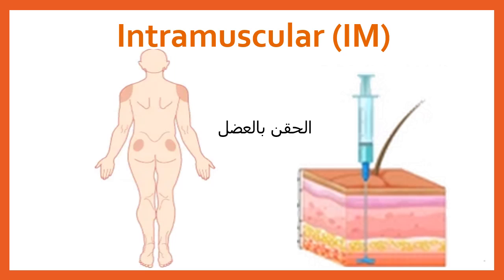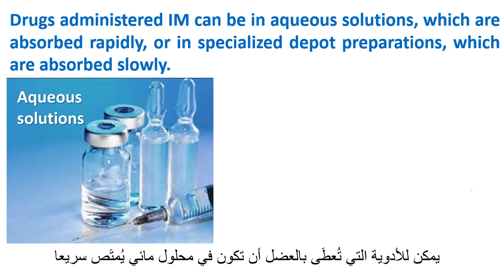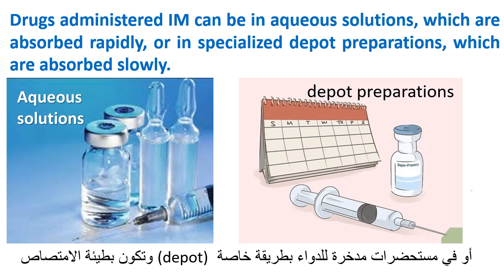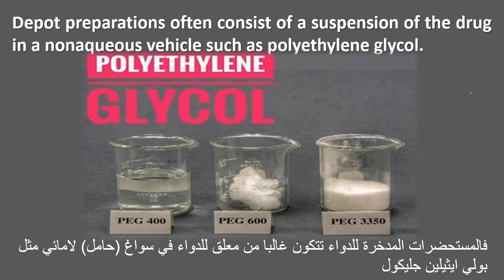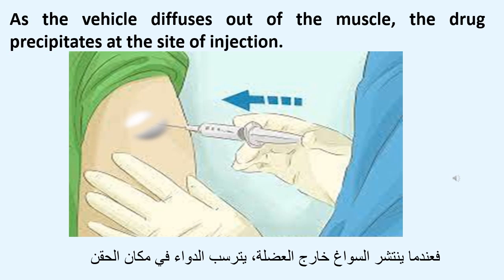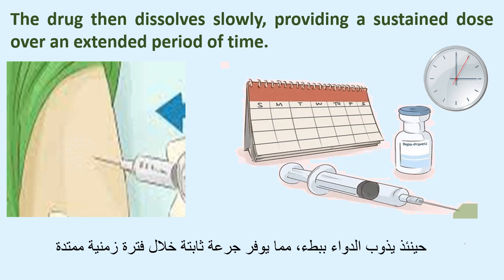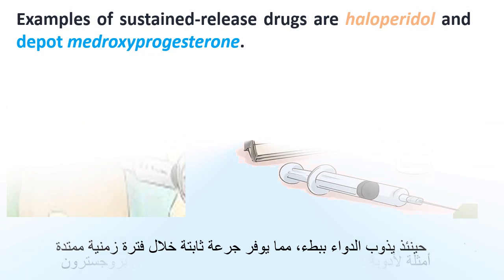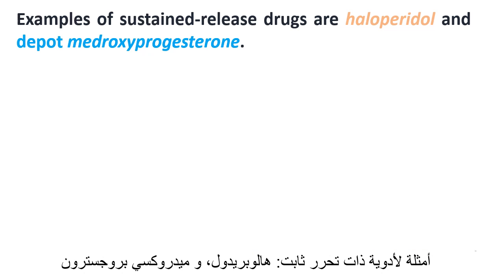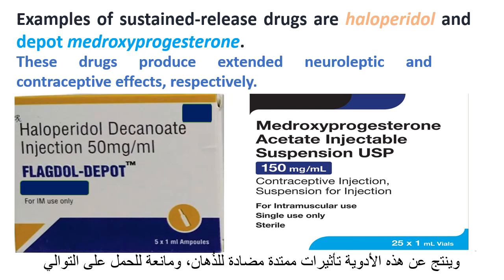Intramuscular. Drugs administered intramuscularly can be in aqueous solutions, which are absorbed rapidly, or in specialized depot preparations, which are absorbed slowly. Depot preparations often consist of a suspension of the drug in a non-aqueous vehicle such as polyethylene glycol. As the vehicle diffuses out of the muscle, the drug precipitates at the site of injection and then dissolves slowly, providing a sustained dose over an extended period of time. Examples of sustained-release drugs are haloperidol and depot medroxyprogesterone, which produce extended neuroleptic and contraceptive effects respectively.